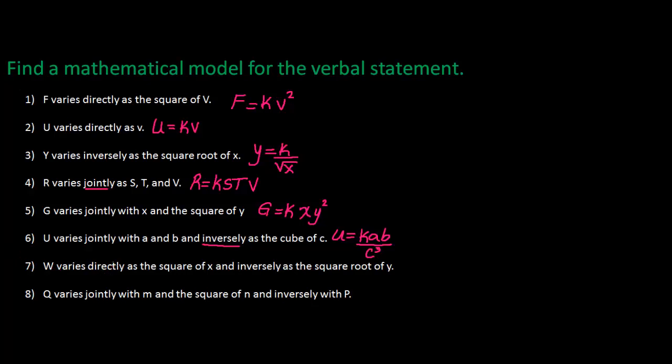W varies directly as the square of X, so W varies directly as the square of X, so X squared. And inversely, so now we go to the denominator, as the square root of Y. Here's the square root of Y.